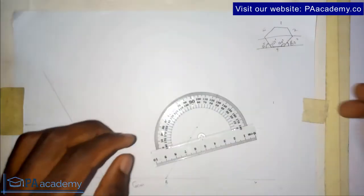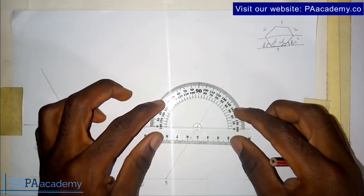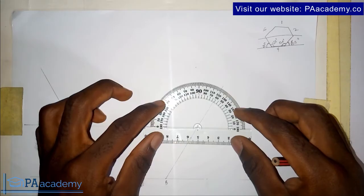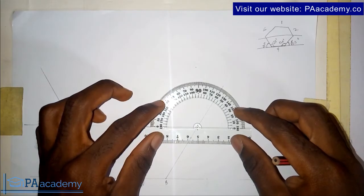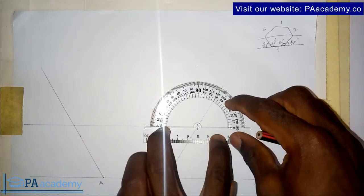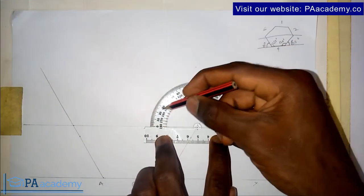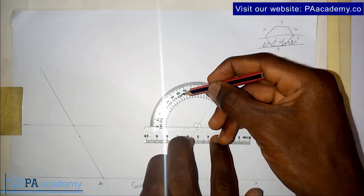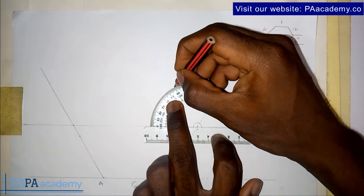Now I'll bring back the protractor again. From this point I will measure 60 degrees from this direction. My 60 degrees is here.